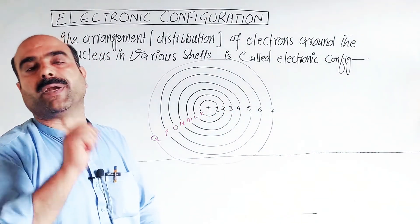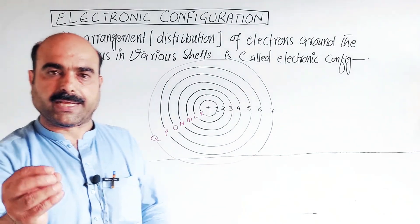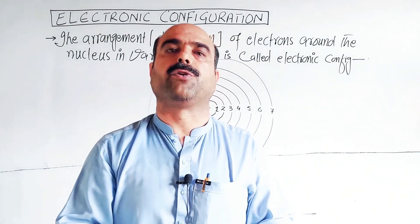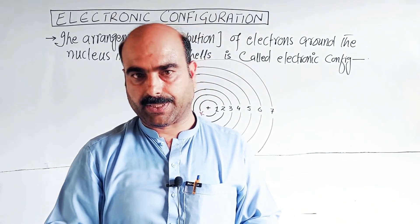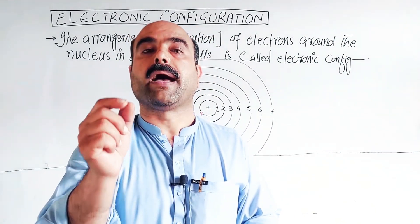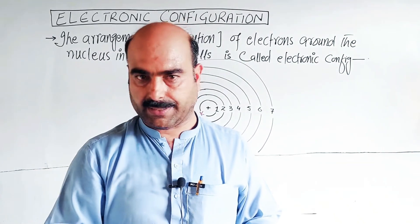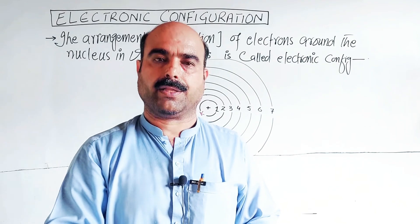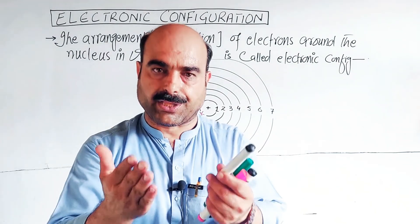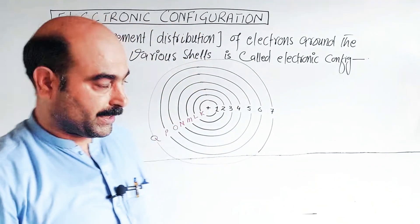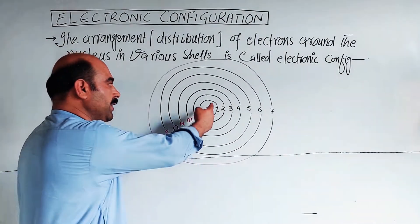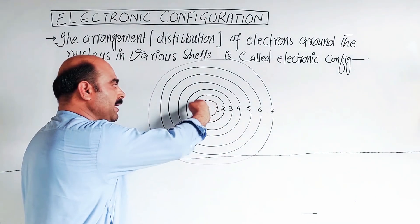Students, in more detailed videos we will discuss sub-shells and how electrons are arranged in sub-shells and orbitals around the nucleus. All of this is part of electronic configuration.